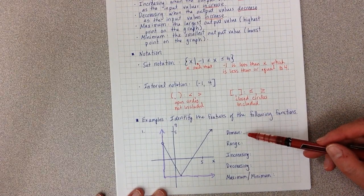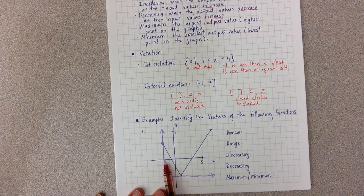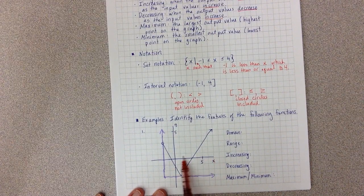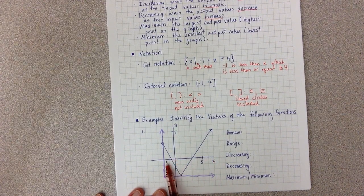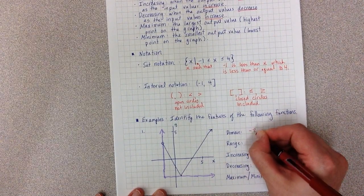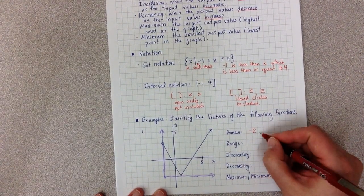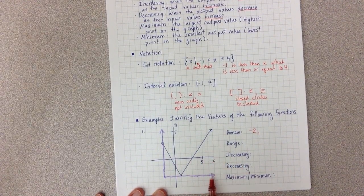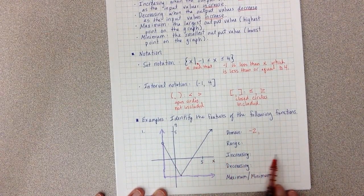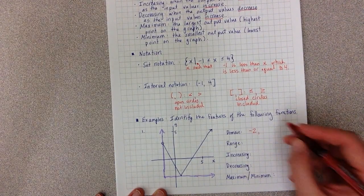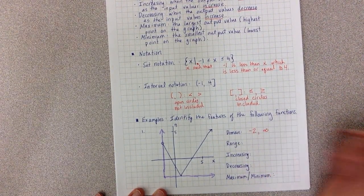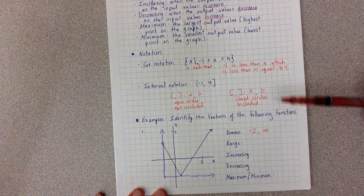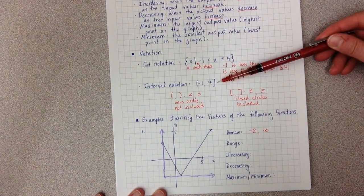So let's look at the domain first. Domain are my x values. So that's x-axis. And I start with my smallest. Well, smallest are the negatives. So my smallest is negative 2. And I put a comma. And then I do my largest. But because of that arrow, remember, I'm always getting larger. So then we use this lovely symbol called infinity. And it's like a sideways 8.